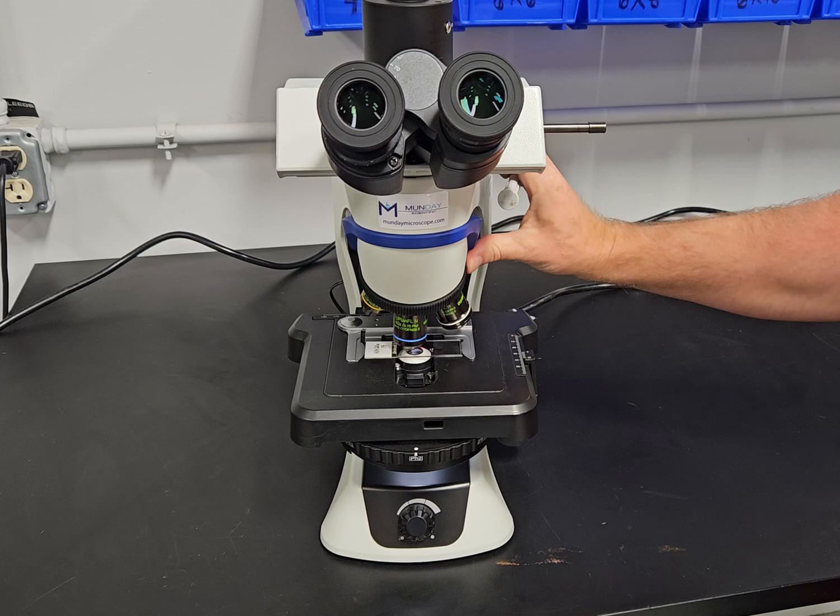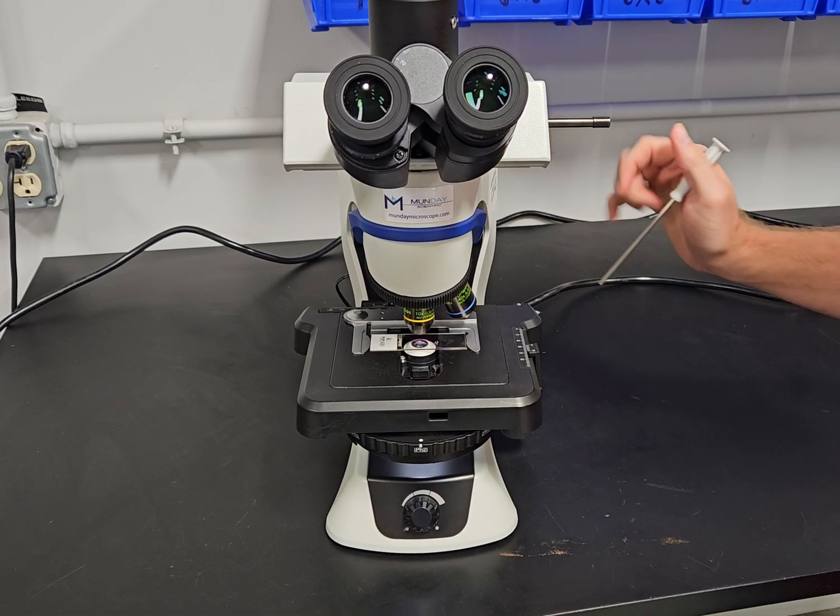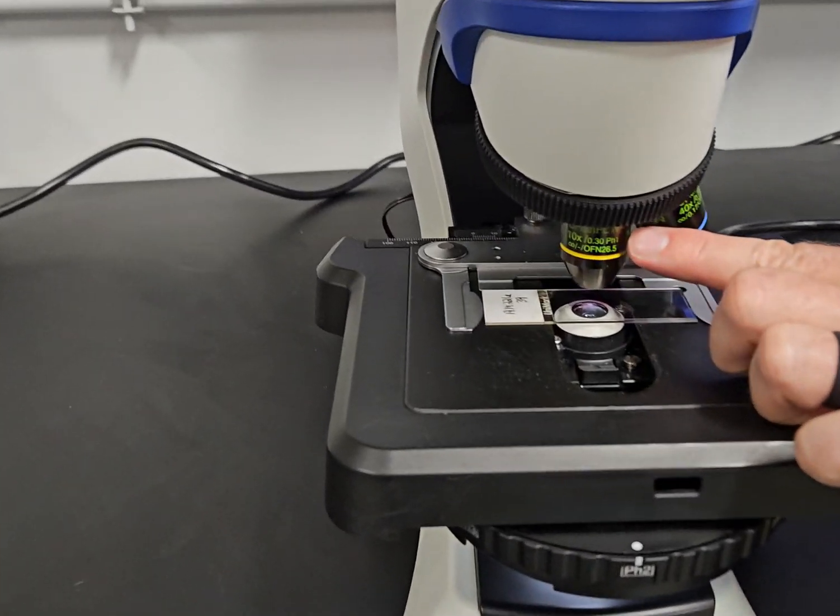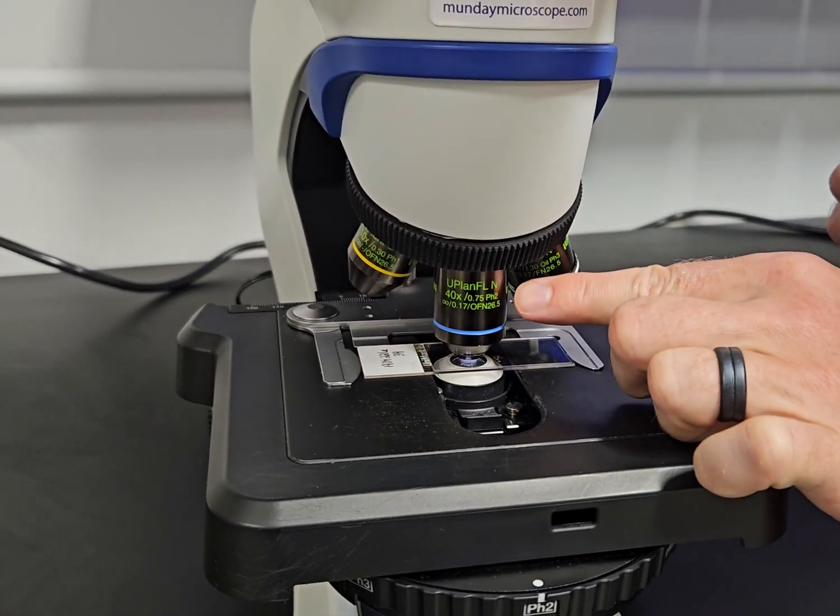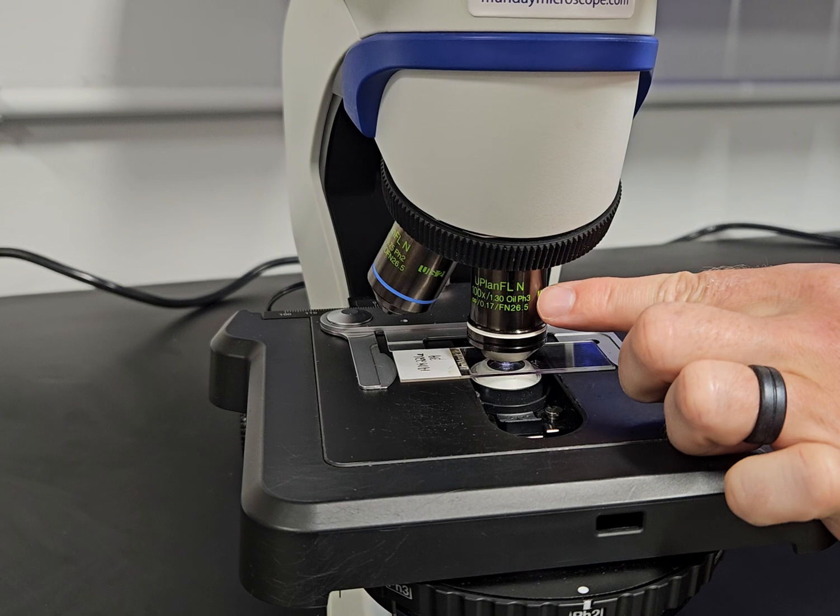Each one of these objectives corresponds to a different phase ring within the condenser. You can see this one says phase one pH one. This one says pH two. This one says pH three.